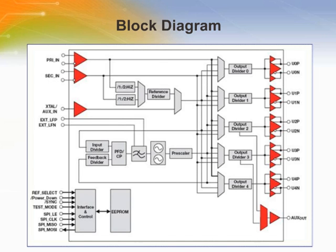The CDCE62005 is comprised of four primary blocks: the interface and control block, the input block, the output block, and the synthesizer block. The interface and control block determines the state of the CDCE62005 at power-up based on the contents of the onboard EEPROM. In addition to the EEPROM, the SPI port is available to configure the CDCE62005 by writing directly to the device registers after power-up. The input block selects which of the three input ports is available for use by the synthesizer block and buffers all clock inputs. The synthesizer block multiplies and filters the input clock selected by the input block.